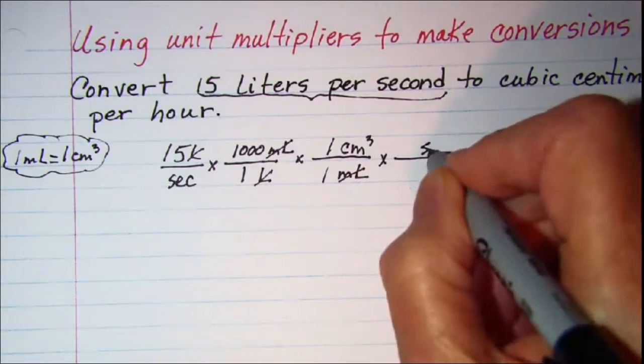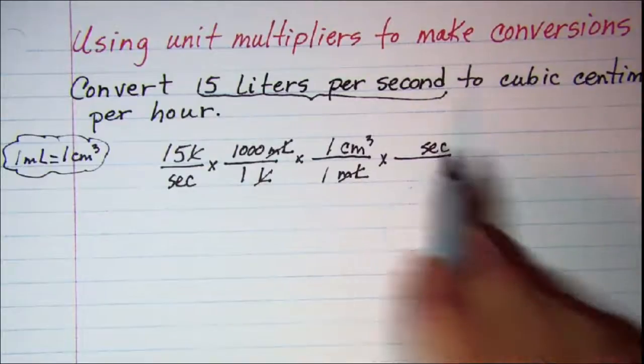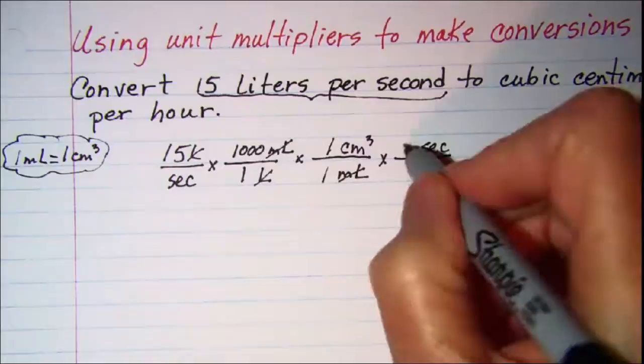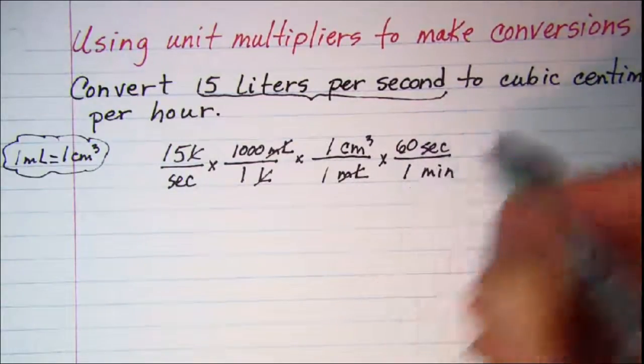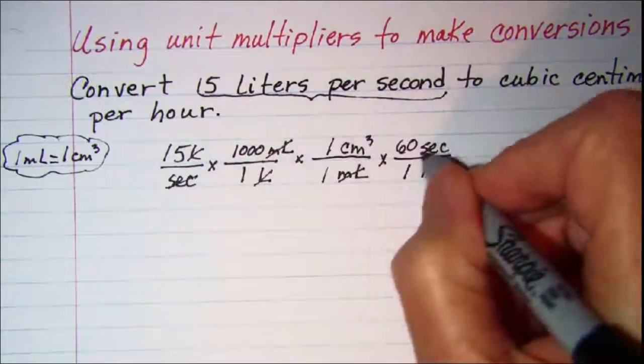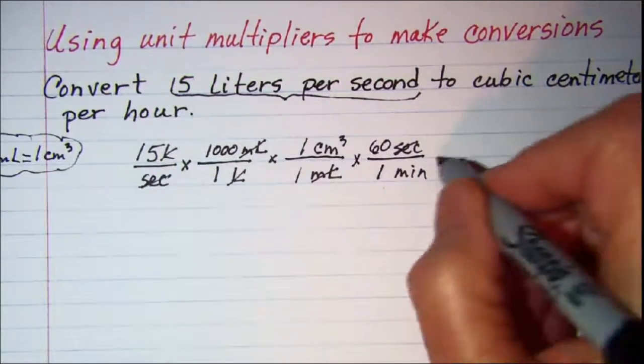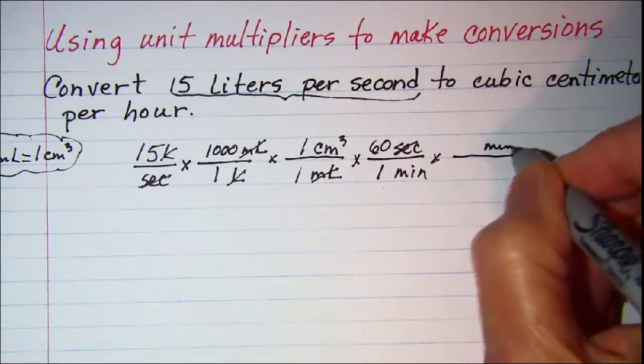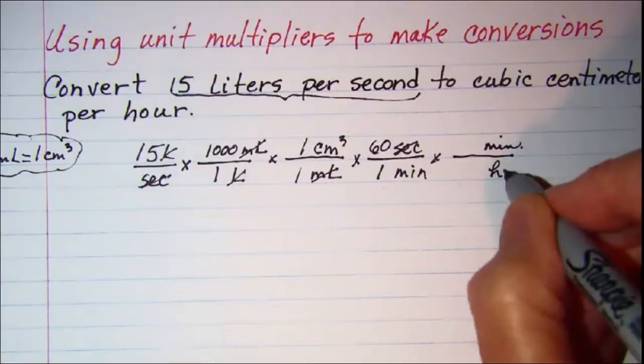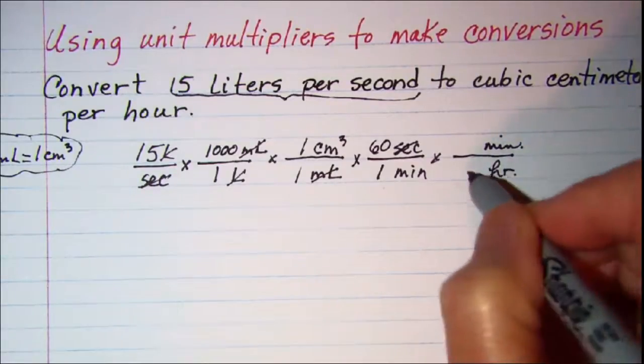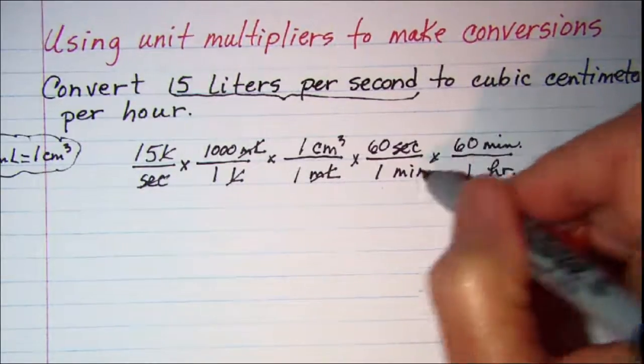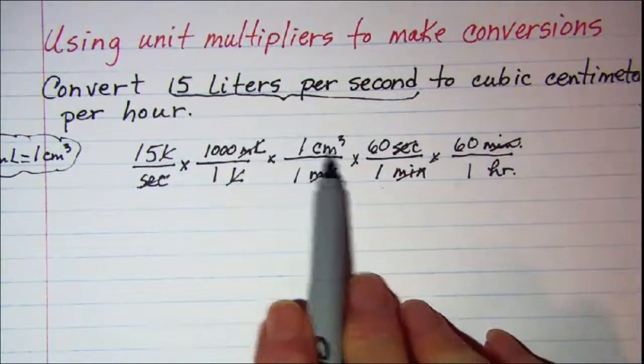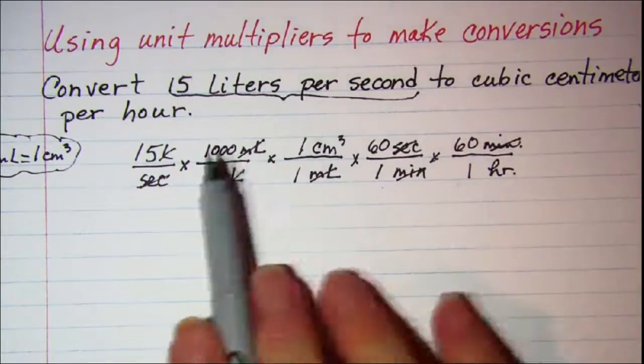So I'm going to cancel off the unit seconds and go to minutes. I know that we have 60 seconds in 1 minute. Then I'm going to hours, so I want to cancel off my units minutes and go to hours. We know that 1 hour is 60 minutes. Now the minutes cancel and I'm currently in cubic centimeters per hour, which is what I wanted.